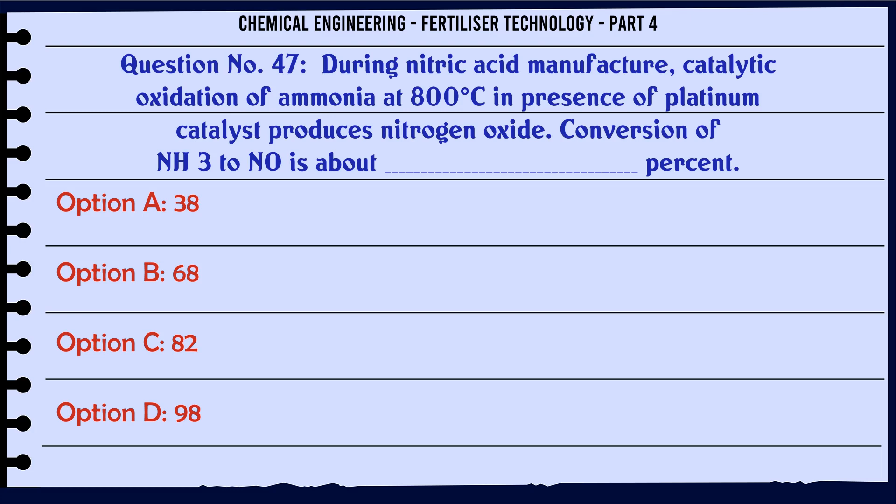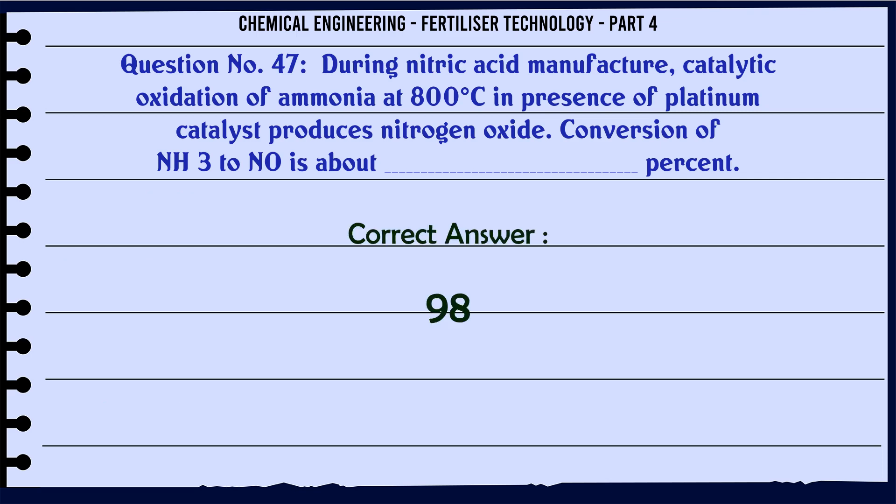During nitric acid manufacture, catalytic oxidation of ammonia at 800°C in presence of platinum catalyst produces nitrogen oxide. Conversion of NH3 to NO is about what percent? a. 38%, b. 68%, c. 72%, d. 98%. The correct answer is: 98%.